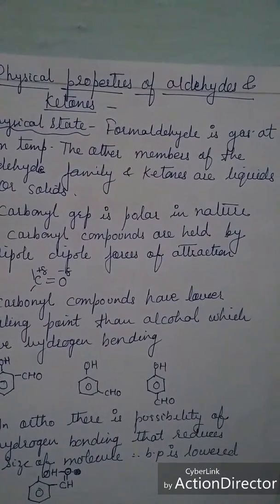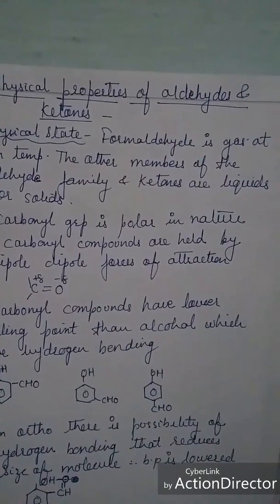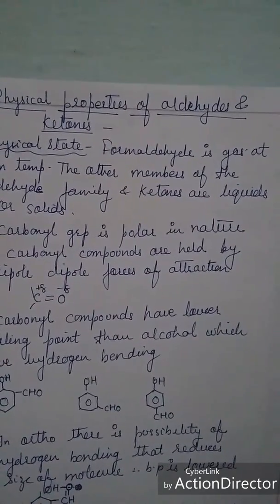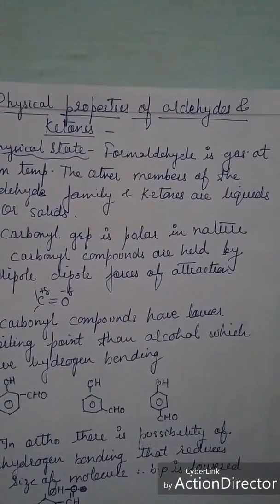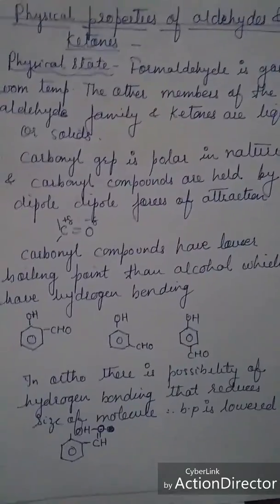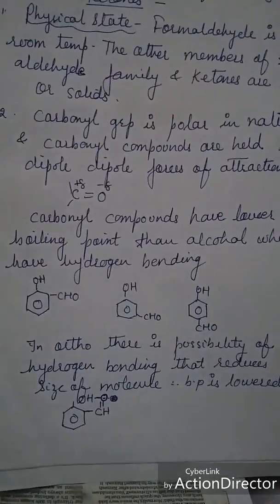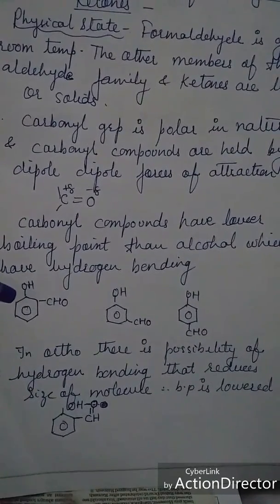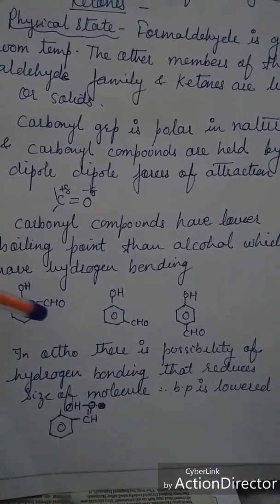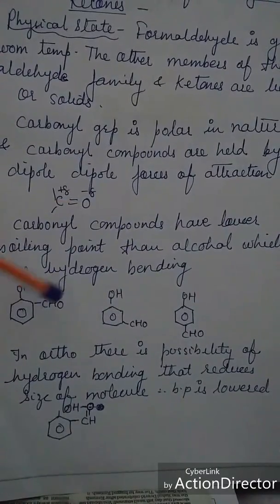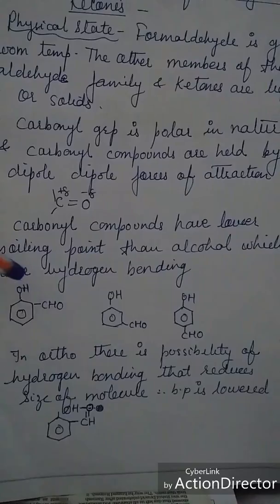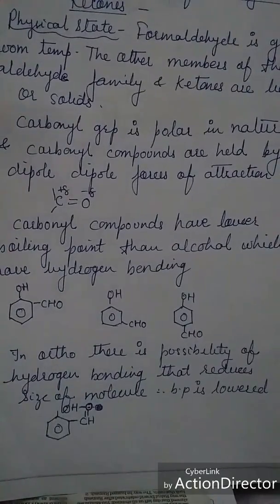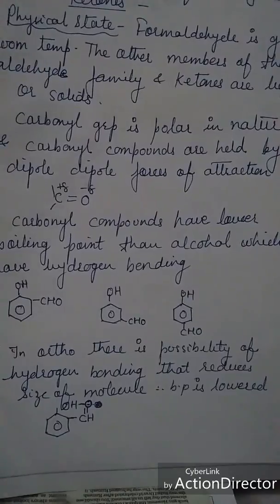Now let us talk about the physical properties of aldehydes and ketones. Formaldehyde is a gas at room temperature, whereas other members of the aldehyde family and ketones are liquids or solids. The carbonyl group is polar in nature, and these compounds are held together by dipole-dipole forces of attraction. Carbonyl compounds have lower boiling points than alcohols because alcohols have hydrogen bonding. In ortho-substituted compounds, intramolecular hydrogen bonding reduces the boiling point.